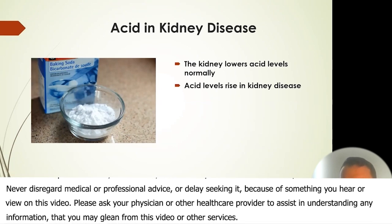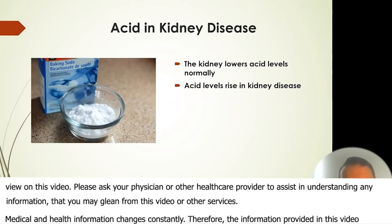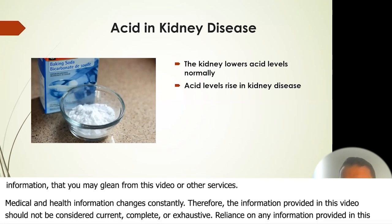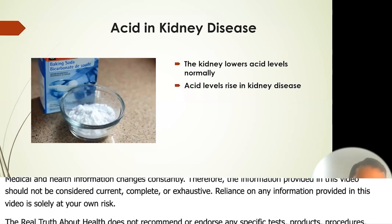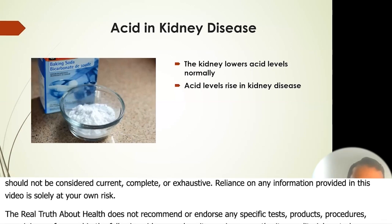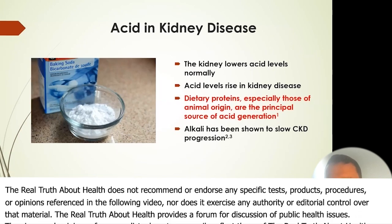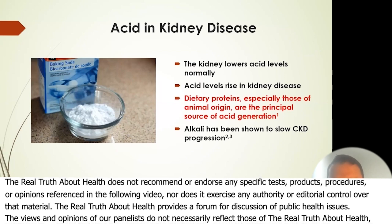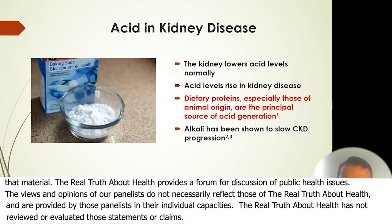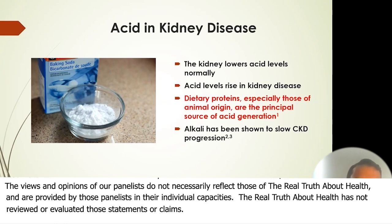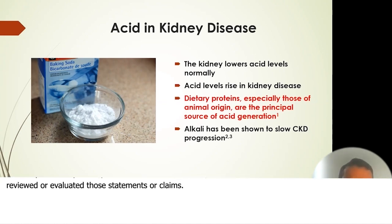Kidneys lower acid levels normally — that's one of the many functions they have — but acid levels rise in kidney disease because the kidney isn't working so well. Dietary proteins, especially those of animal origin, are the principal source of acid generation, and alkali has been shown to slow CKD progression.